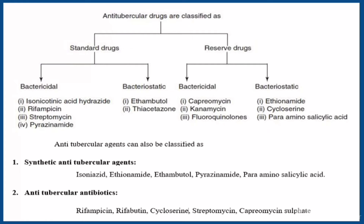We will now see the second classification type. It classifies anti-tubercular agents into two types: standard drugs and reserved drugs. Standard drugs are further classified into bactericidal and bacteriostatic. Under bactericidal, examples are isoniazid (isonicotinic acid hydrazide), rifampicin, streptomycin, and pyrazinamide. Under bacteriostatic, examples are ethambutol and thiacetazone.